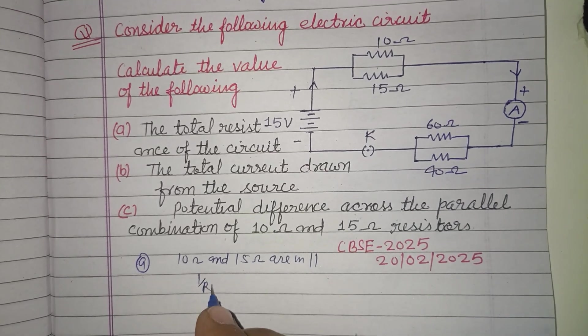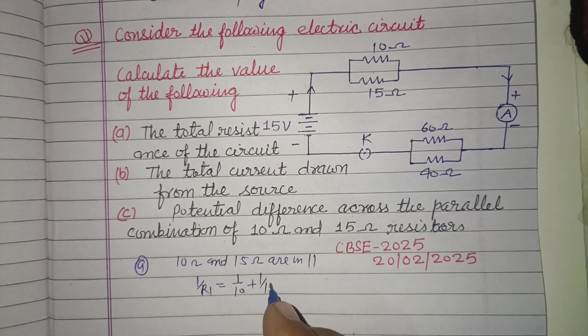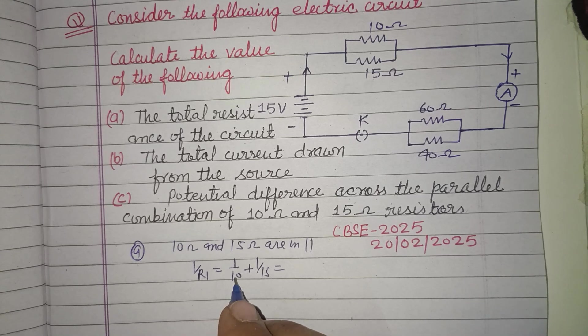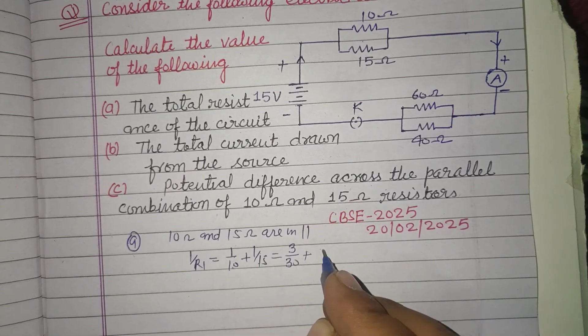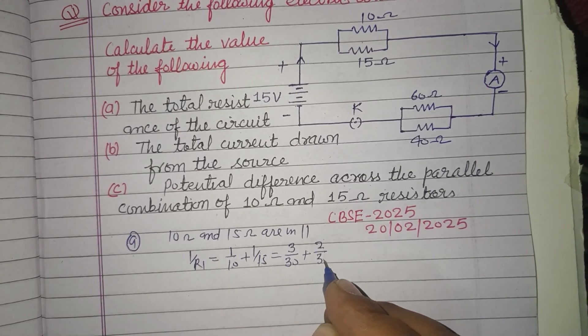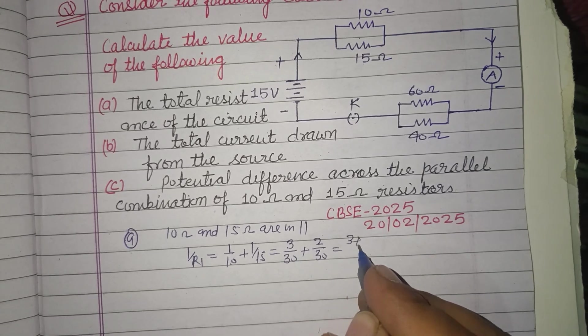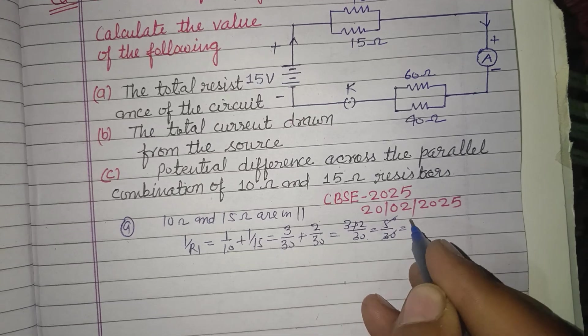So their equivalent resistance, let it be R1. 1 upon 10 plus 1 upon 15. We multiply this by 3, 3 upon 30, and this by 2, so 2 upon 30. Denominator becomes same, now 3 plus 2 upon 30, that is 5 upon 30, and that is 1 by 6. So R1 is 6 ohm.